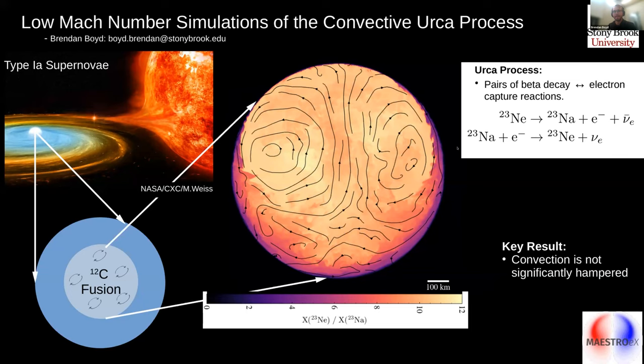And that's because there's this unique process called the convective URCA process going on in the white dwarf. This is a pretty complex relation between the convection and weak decay electron capture reactions called the URCA reactions that I've written down to the right here. And these reactions can actually steal some of the energy away from the white dwarf. And it's been proposed that this can maybe slow down convection or cool the white dwarf down significantly.